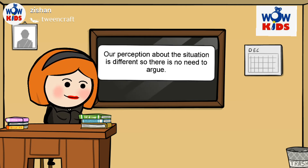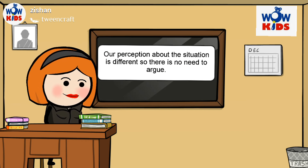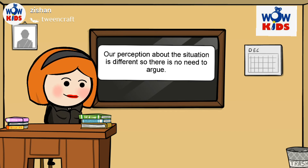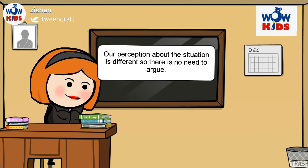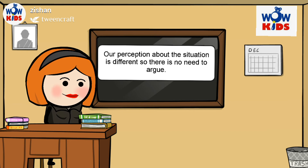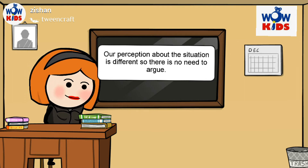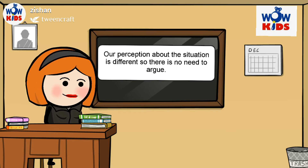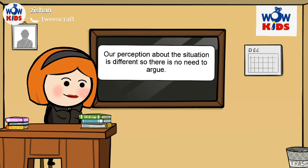Let's make a few sentences using the word perception. Read this sentence: 'Our perception about the situation is different, so there is no need to argue.' This sentence means when two people have different thinking about the same thing or same situation — like 6 and 9, one person reads it as 6, another reads it as 9. There is no need to argue, but we should respect the point of view of others.